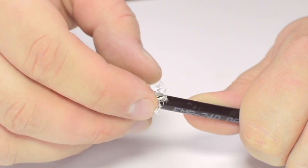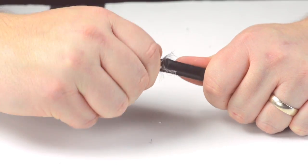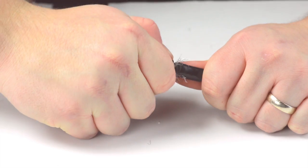Pull back the braided shield and insert the connector housing onto the cable. Apply pressure and twist as needed.